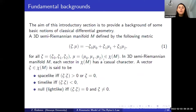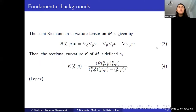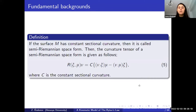Here we use the inner product given in equation 1. Since the Lorentzian metric has a minus sign in equation 1, we have three types of vectors: space-like, time-like, and null. The Frenet frame equations related to Lorentzian Minkowski space are defined by equation 2. The semi-Riemannian curvature tensor on M is defined by equation 4. If the surface M has constant sectional curvature, it is called a semi-Riemannian space form, and the curvature tensor is given in equation 5.